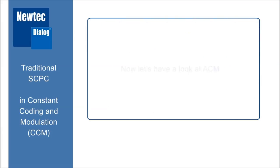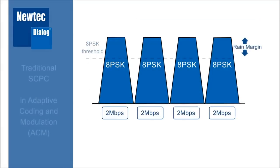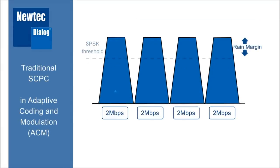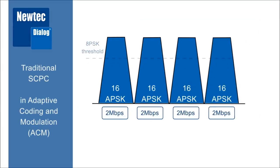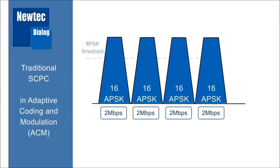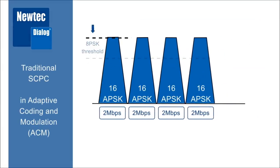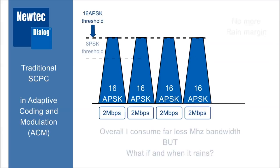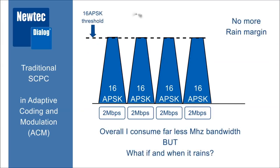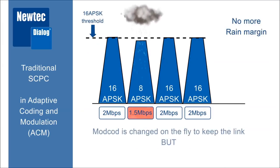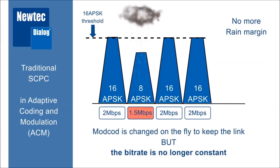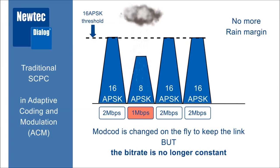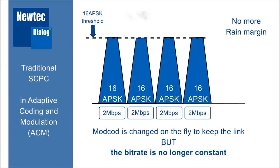Now let's have a look at ACM — maybe that one can solve the problem. The good thing is we no longer need a rain margin, so we save a lot of bandwidth. But when it starts to rain, we have to drop our modulation and coding scheme to keep the link, and with that our fixed bitrate is gone.